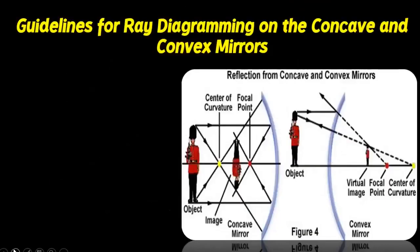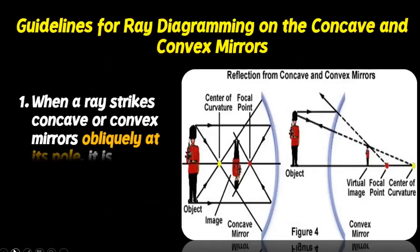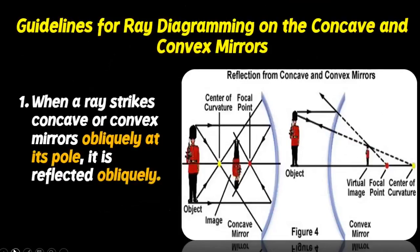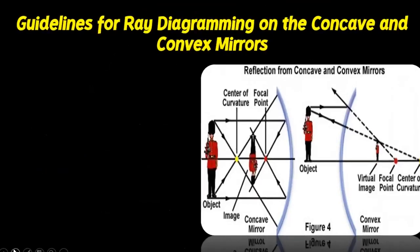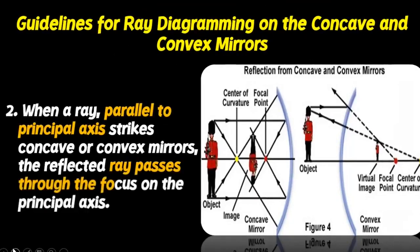Here are the guidelines for ray diagramming on concave and convex mirrors. First, when a ray strikes concave or convex mirrors obliquely at its pole, it is reflected obliquely. Second, when a ray parallel to the principal axis strikes concave or convex mirrors, the reflected ray passes through the focus on the principal axis.